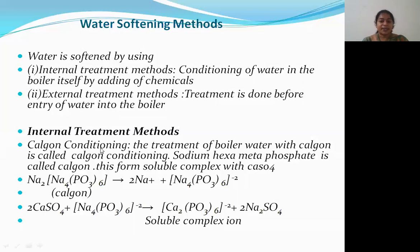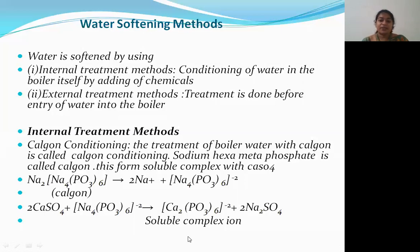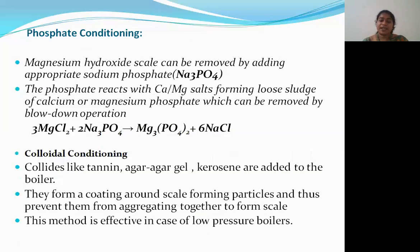Let's see what Calgon conditioning is. Calgon conditioning is the treatment of boiler water with Calgon, also called sodium hexametaphosphate. This forms a soluble complex with calcium sulfate. When sodium hexametaphosphate reacts with calcium sulfate, it forms a soluble complex ion, allowing us to remove all calcium-containing salts from the water. This is the Calgon conditioning process.